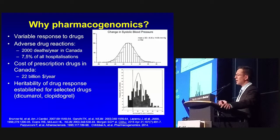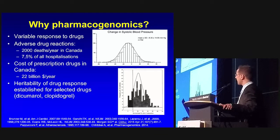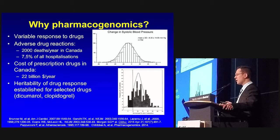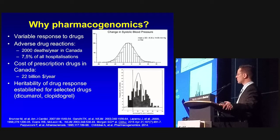Why do we think we need that? As a clinician, you all know that patients respond much differently to drugs. Some of our patients will be more likely to develop adverse drug reactions. In Canada, it is estimated that adverse drug reactions are responsible for 2,000 deaths per year and that these are responsible for 7.5% of hospitalizations. The cost of prescription drugs in Canada each year is $22 billion, and this is increasing year after year. So if we could identify even a small proportion of patients who should not be treated with a given drug, this could reduce cost.